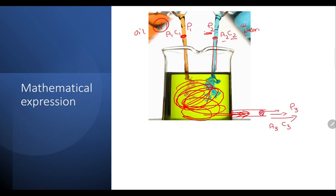And velocity v₃. Now since these two densities have mixed completely, the density of the exiting liquid is going to be different. So how to write a mathematical expression or equation for this? That is my question.